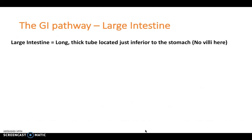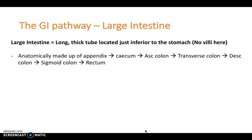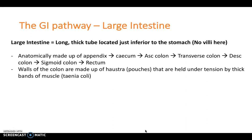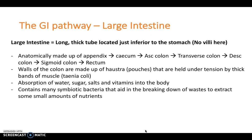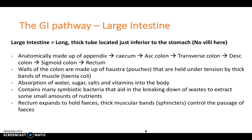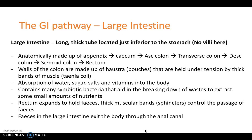The large intestine is a long thick tube located just inferior to the stomach with no villi — a key difference from the small intestine. Anatomically it flows from the cecum and appendix, to the ascending colon, transverse colon, descending colon, sigmoid colon and rectum. The walls are made of haustra — pouches held under high tension by thick bands of muscle called the taeniae coli. The large intestine absorbs water, sugars, salts and vitamins, and contains symbiotic bacteria that aid breakdown of waste. The rectum expands to hold feces, with sphincters controlling passage through the anal canal.